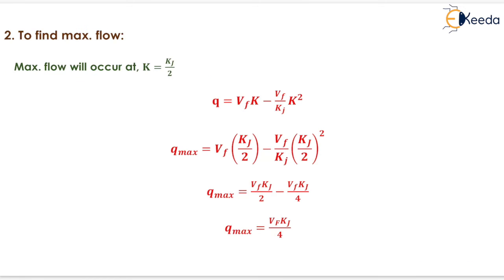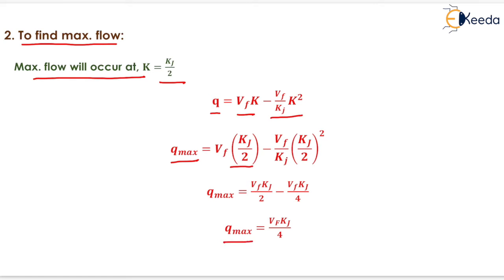The next condition is to find maximum flow. Maximum flow will occur at K equals to Kj by 2. So Q equals Vf into K minus Vf upon Kj into K squared. For finding Qmax, we put K equals to Kj by 2. On putting this value, we will have Qmax equals to Vf into Kj by 4, that is one-fourth of free mean speed into jam density.